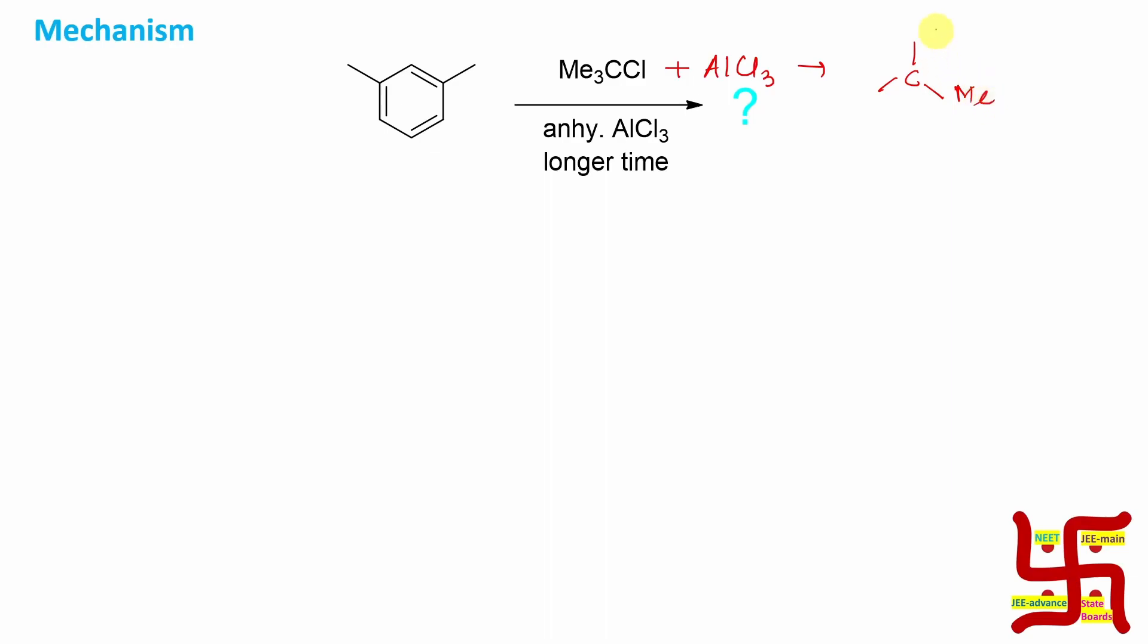Now we know that tertiary butyl cation is relatively very stable. Why? Because in this case, three methyl groups are there, so total nine hydrogens are available for hyperconjugation. Not only that, there are three carbon-carbon bonds, so actually three +I effects are possible. And obviously, AlCl3 will stabilize the chloride as AlCl4 minus.